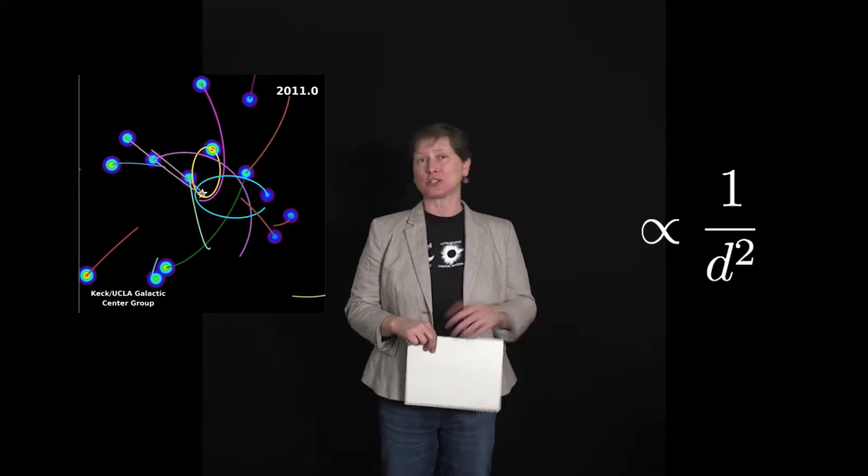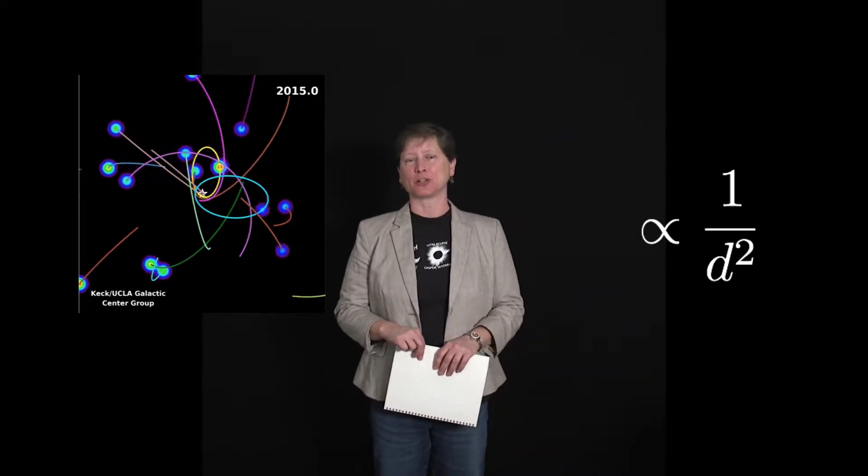If gravity didn't diminish with distance, we'd be in big trouble. But what else does it depend on? For instance, if I hold a key and a book above the ground, which experiences a greater gravitational interaction with Earth? And if I release them, which one will fall first?